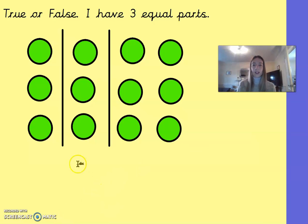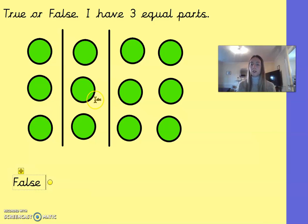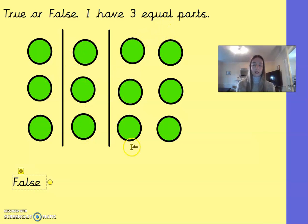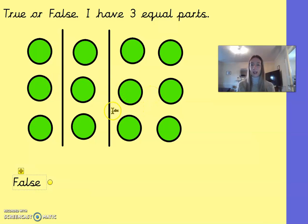Hopefully you said this is false. The reason it is false is because all of the parts do not have the same number of counters. This part has three counters, this part has three counters, but this part has six counters. So although there are three parts, they are not equal because they do not have the same number of counters in each part.